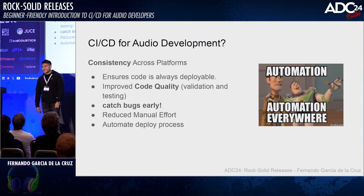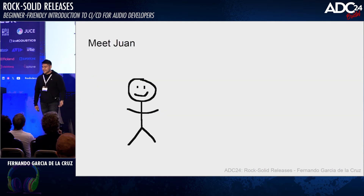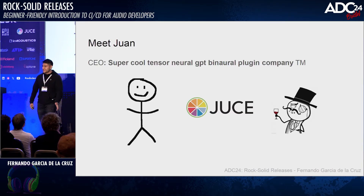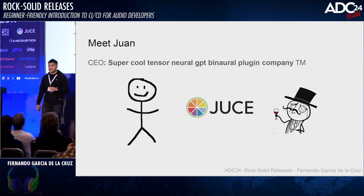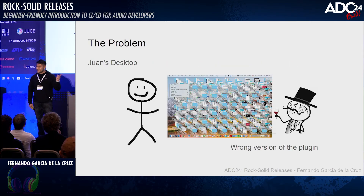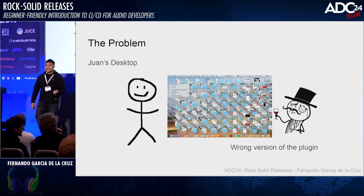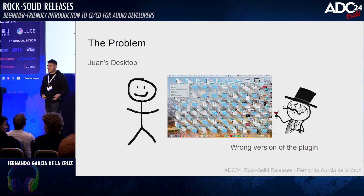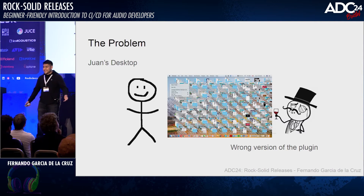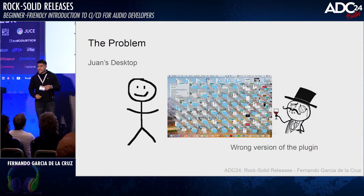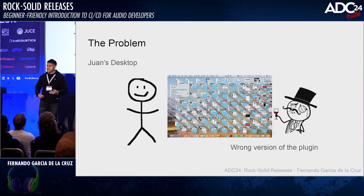Let me present a case where GitHub Actions pipelines could come in handy. Meet Juan — a young developer responsible for a super cool plugin company. He has an awesome plugin he wants to pitch to an investor to potentially get funded. The problem is that Juan's desktop is a mess, and he sends the wrong version of the plugin to the client — a version with bugs that wasn't even running. And Juan said, 'It worked on my computer, so I don't know what happened.' That is the problem a GitHub Actions pipeline could improve.